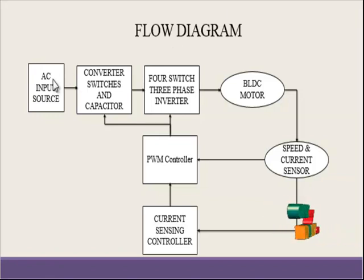Now we are going to discuss our product flow diagram. In the process, we have initially the AC input source. Alternating current is electrical current in which the flow of electrical charge periodically reverses directions, whereas DC current flows in only one direction. The alternating current is the form in which electrical power is delivered.